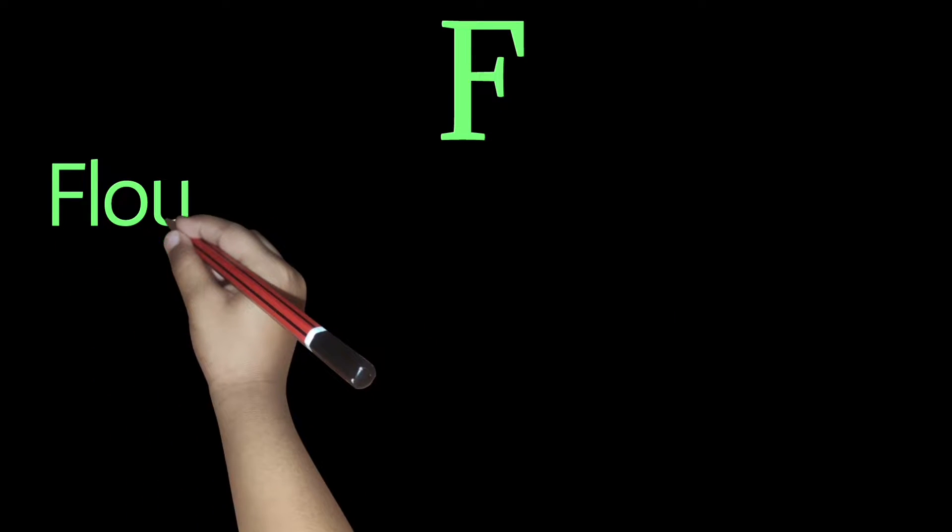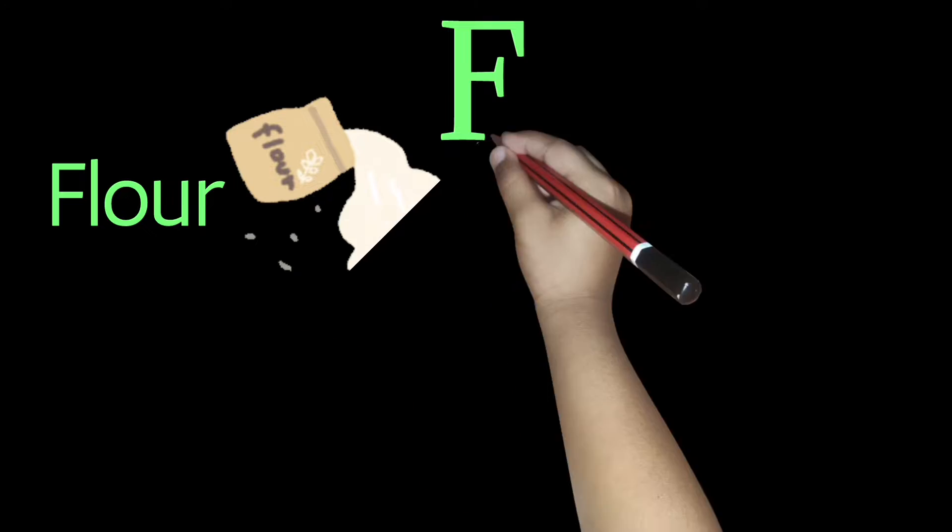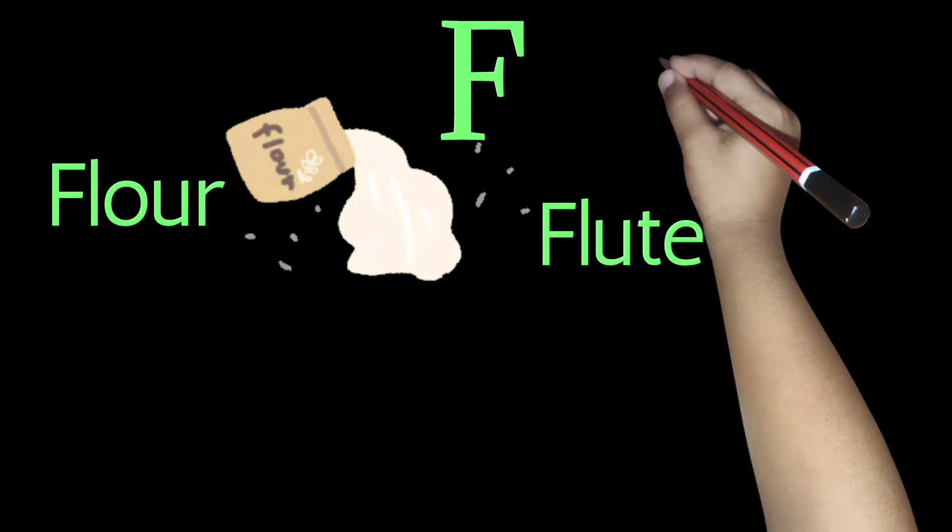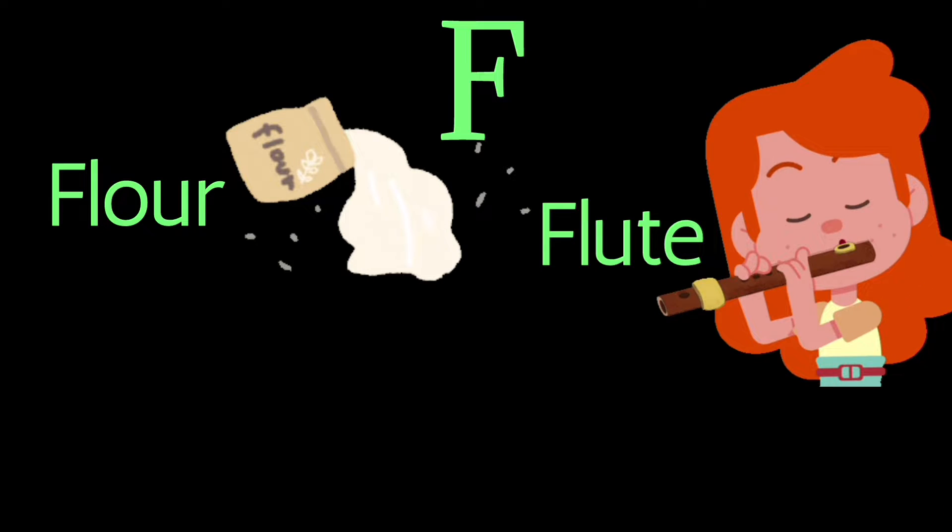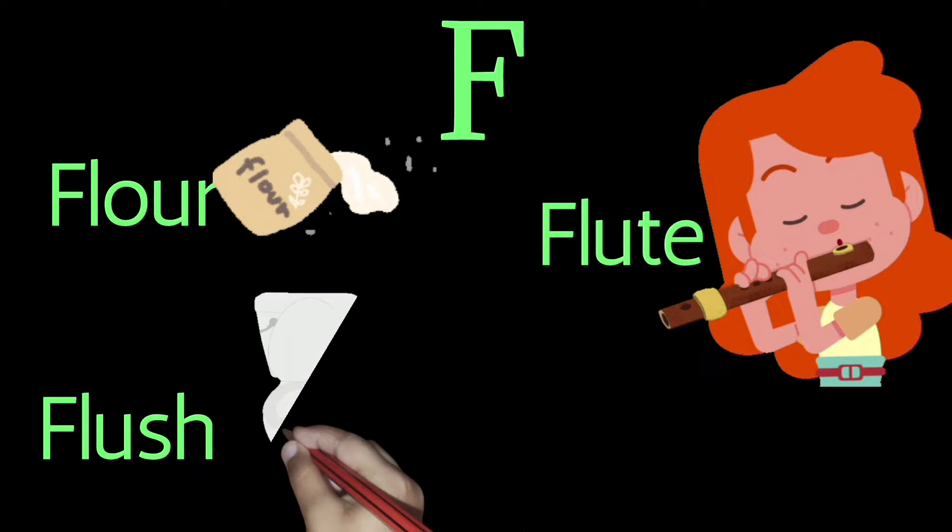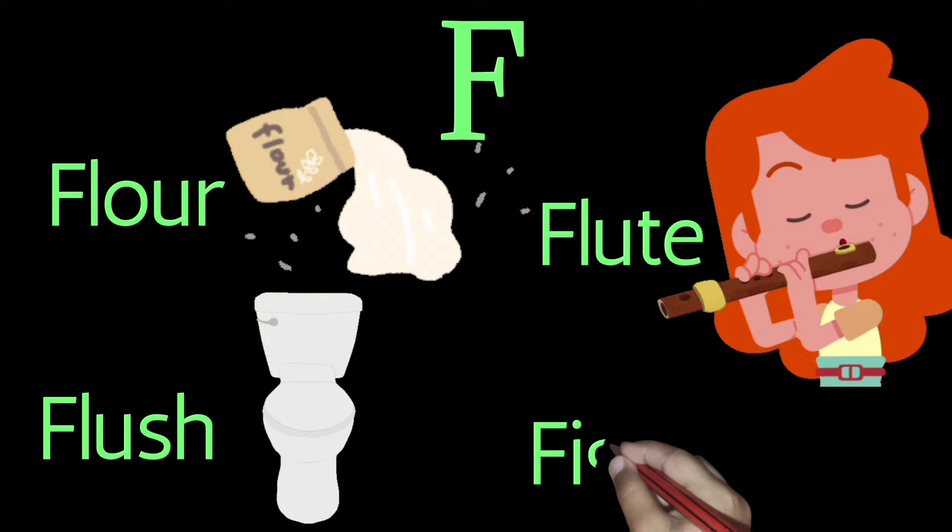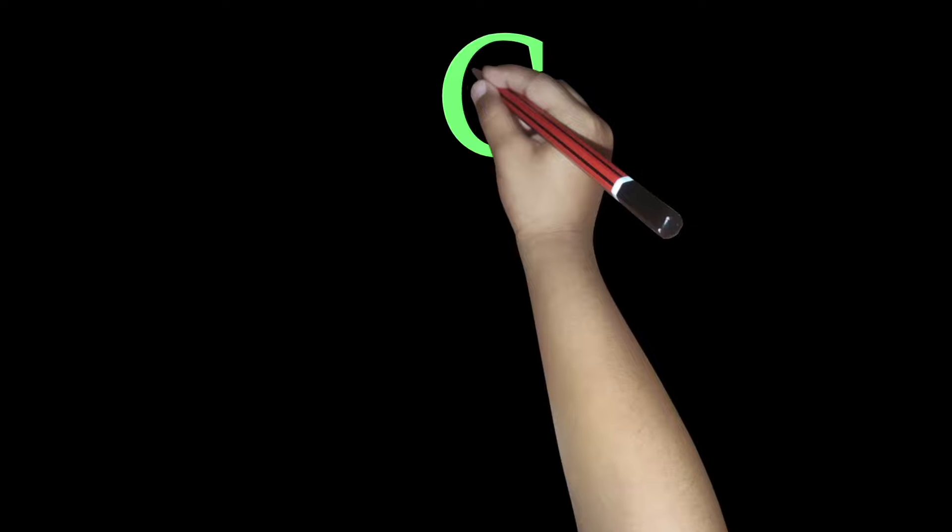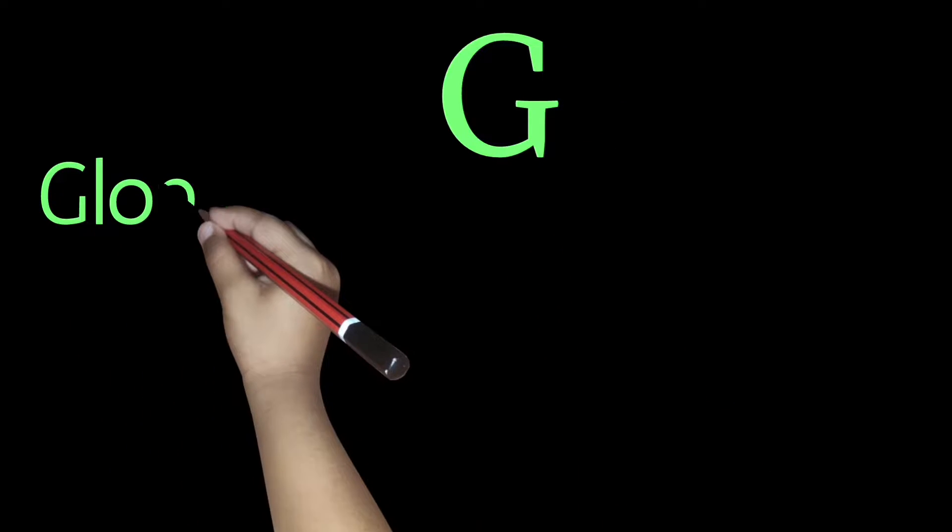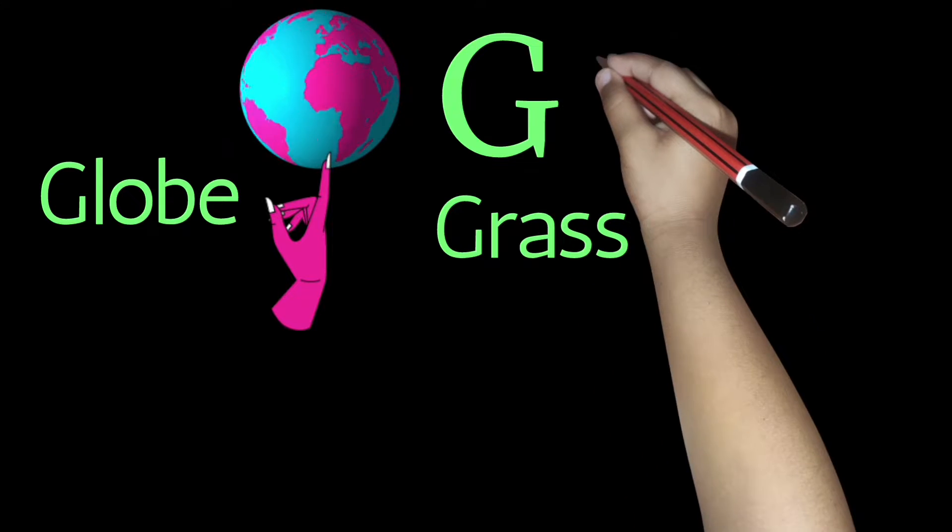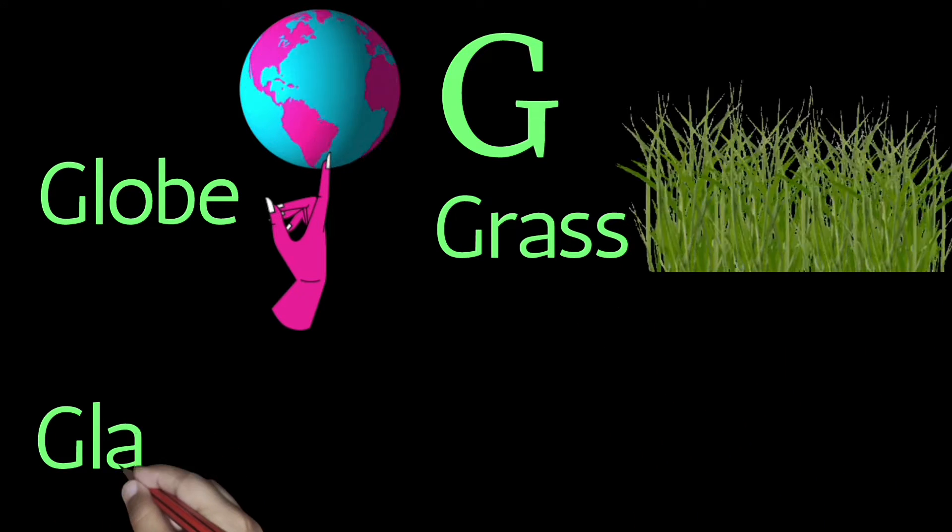F for float, F for flute, F for fight. G for globe, G for grass, G for glass, G for ghost.